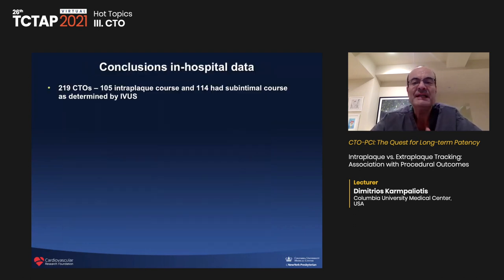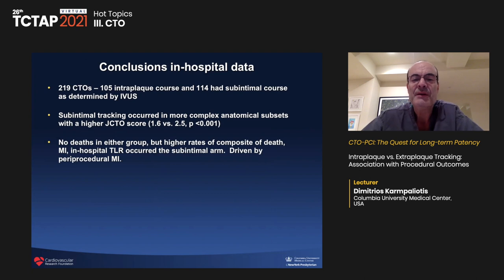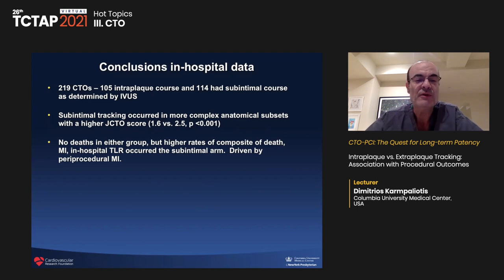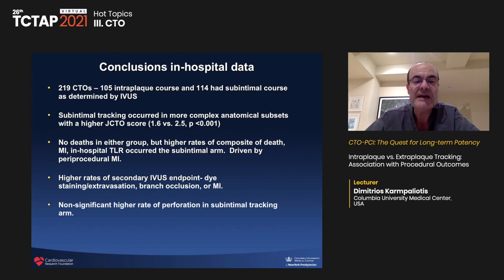In-hospital data conclusion: subintimal tracking occurred in more complex anatomical subjects with higher J-CTO score (1.6 vs. 2.5). There were no deaths in either group, but a higher rate of composite death, MI, and in-hospital TLR in the subintimal arm, driven by periprocedural MI. There were higher rates of secondary IVUS endpoints — dye staining, extravasation, branch occlusion, or MI — but no significant higher rate of perforation in the subintimal tracking arm. This was part one of the study, examining in-hospital outcomes.